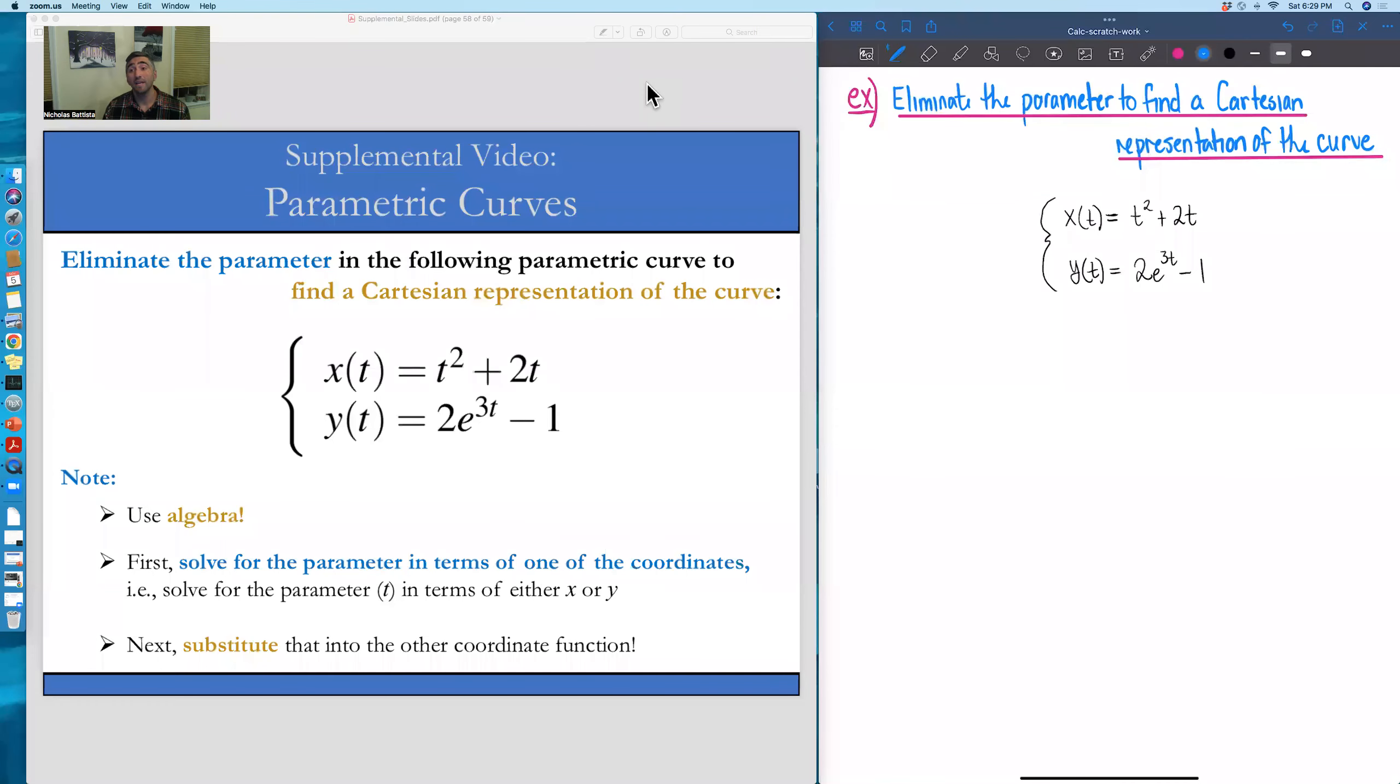In this example, we're going to eliminate the parameter from this parametric curve to find a Cartesian representation of it. So the name of the game is we're handed this parametric curve where we have a function for the x coordinate in terms of t and a function y of t that describes the y coordinate. Both of these are functions of our parameter t.